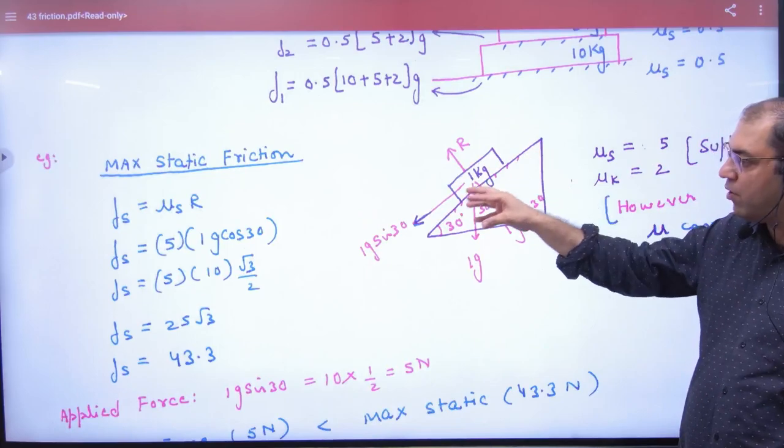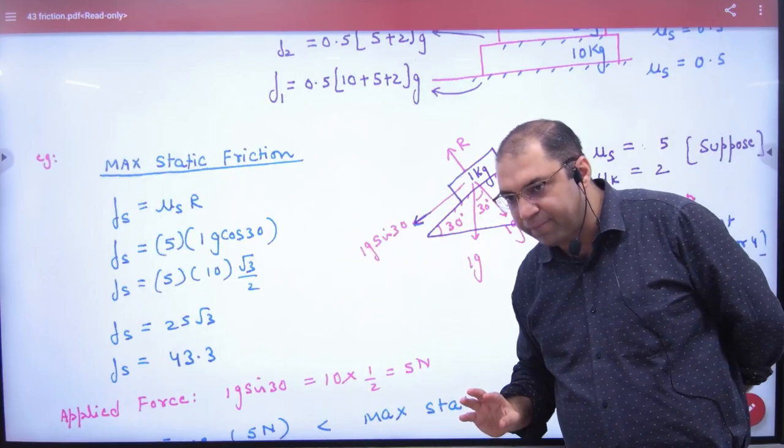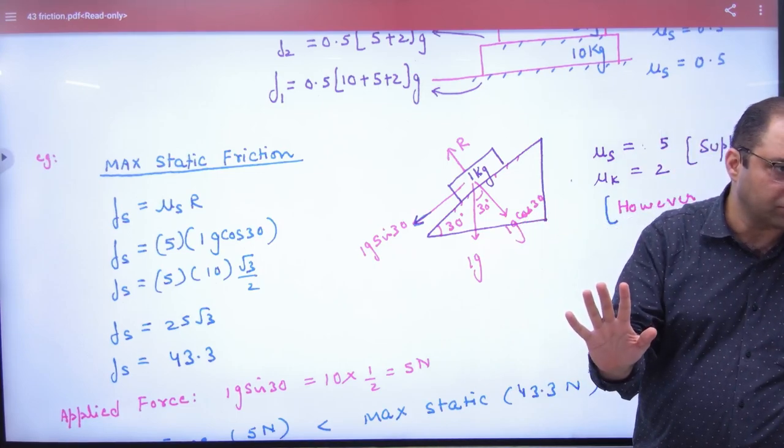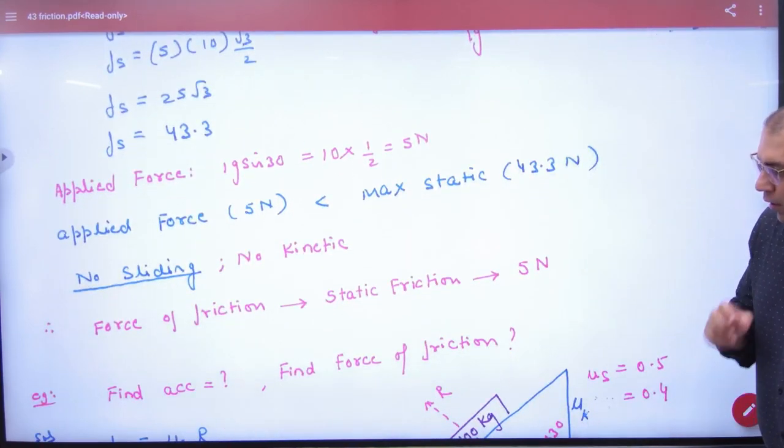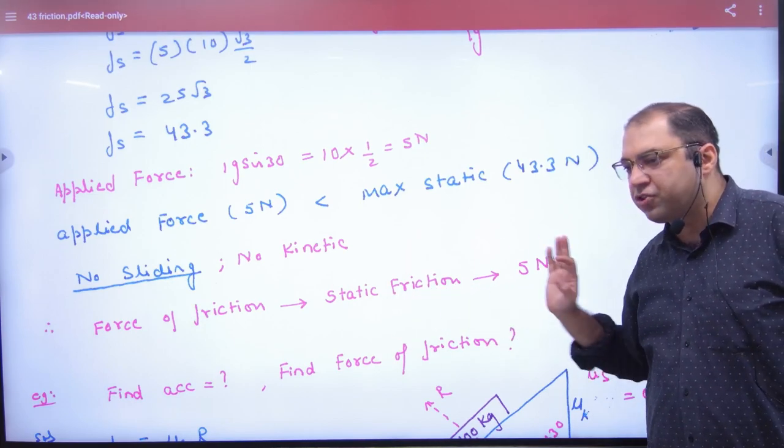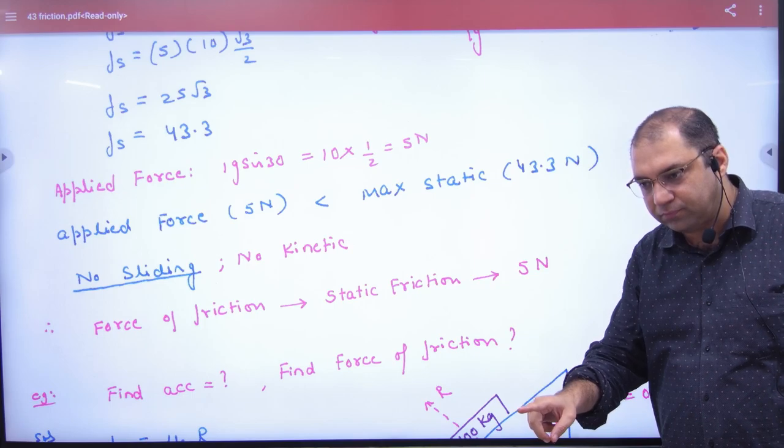Now because your force is 5 N, so what will the force of friction value be? 5 N. Right? 5 N. So the answer is, which friction will it be? Static. Static. Is it clear?